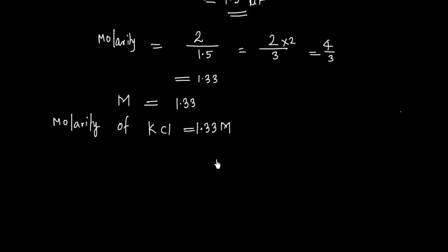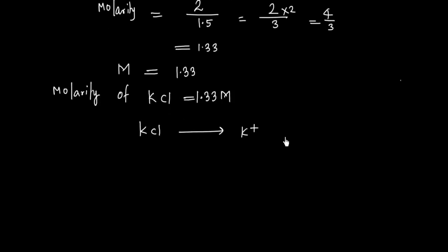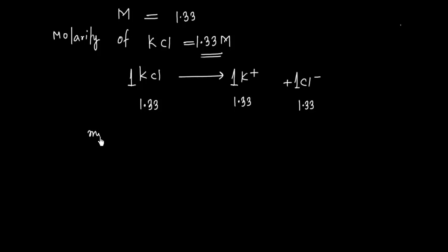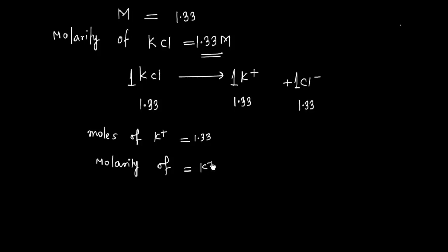We can also calculate the molarity of K⁺ and Cl⁻ ions. KCl dissociates in solution to give K⁺ and Cl⁻, so 1 mole gives 1 mole of K⁺ and 1 mole of Cl⁻. Since the molarity of KCl is 1.33 M, the molarity of K⁺ is also 1.33 M and the molarity of Cl⁻ is also 1.33 M.